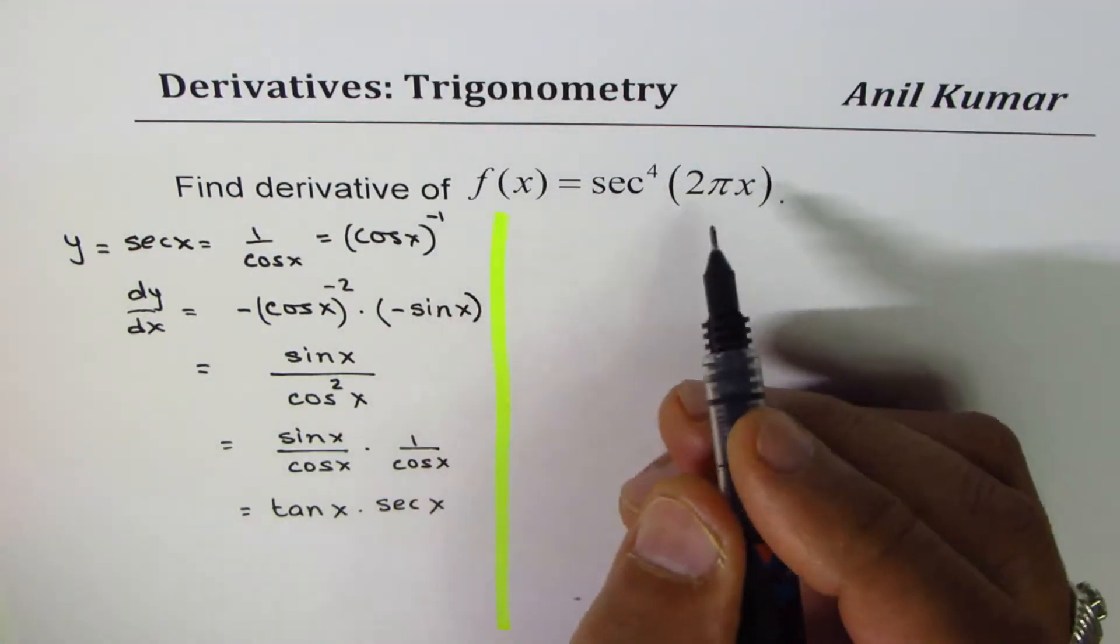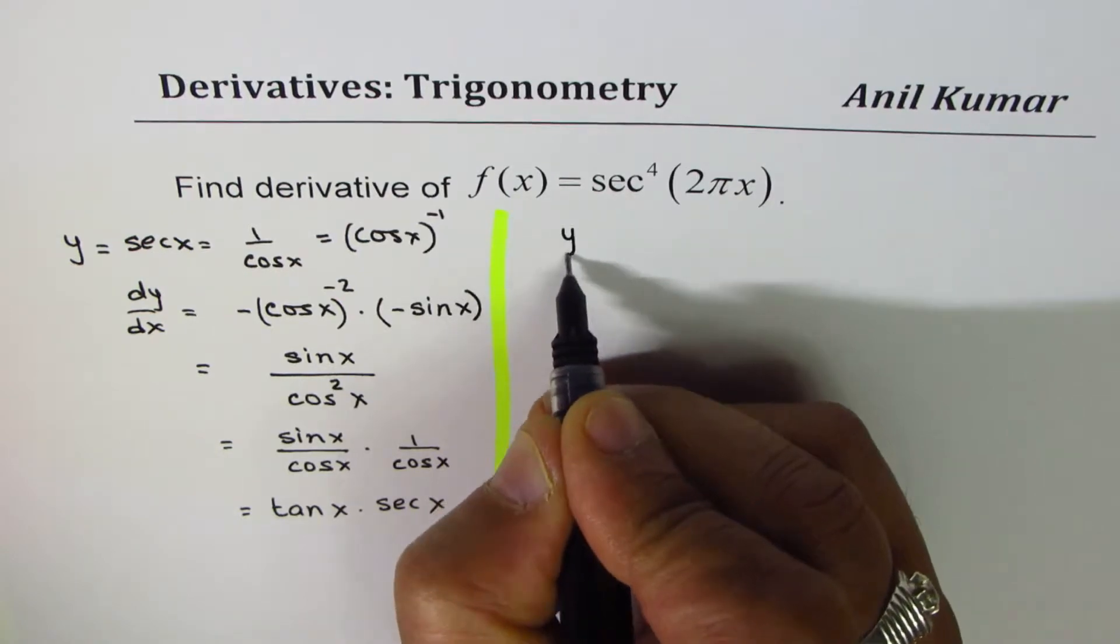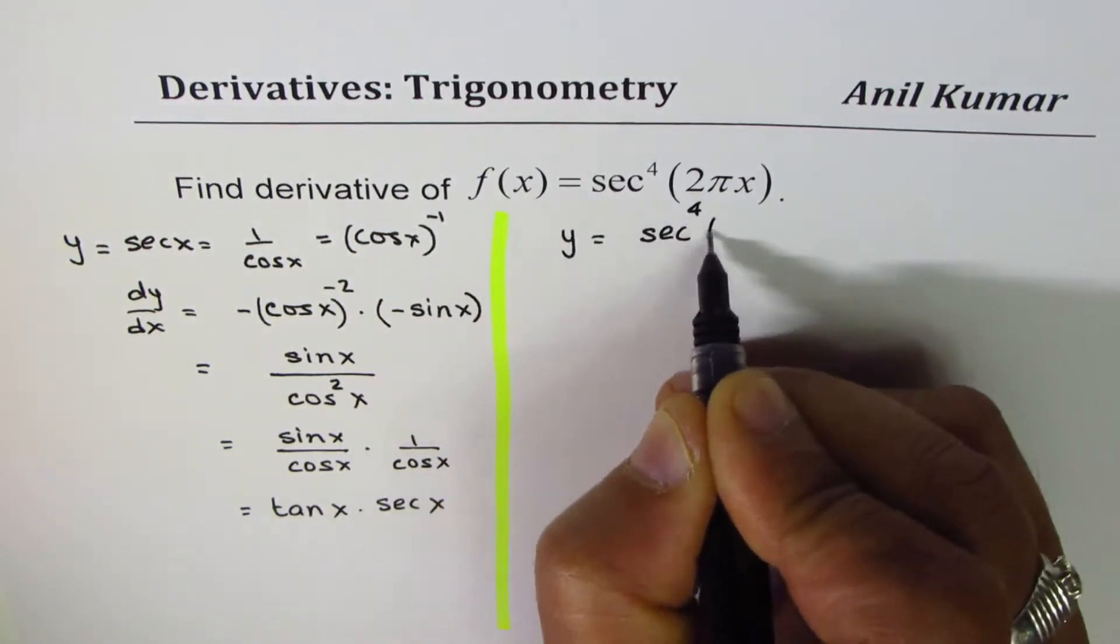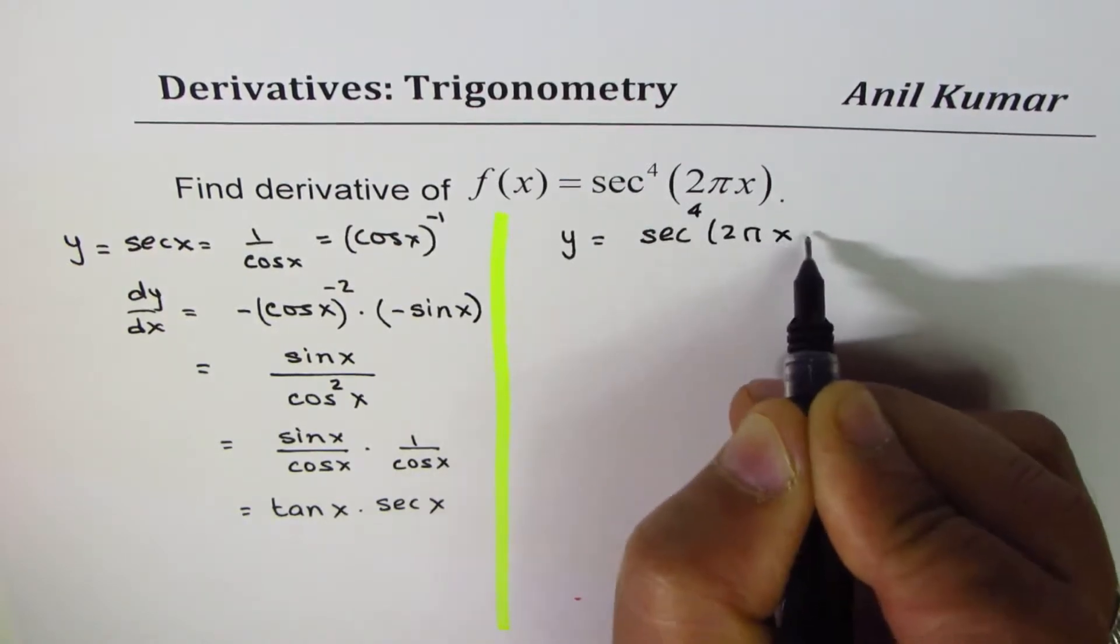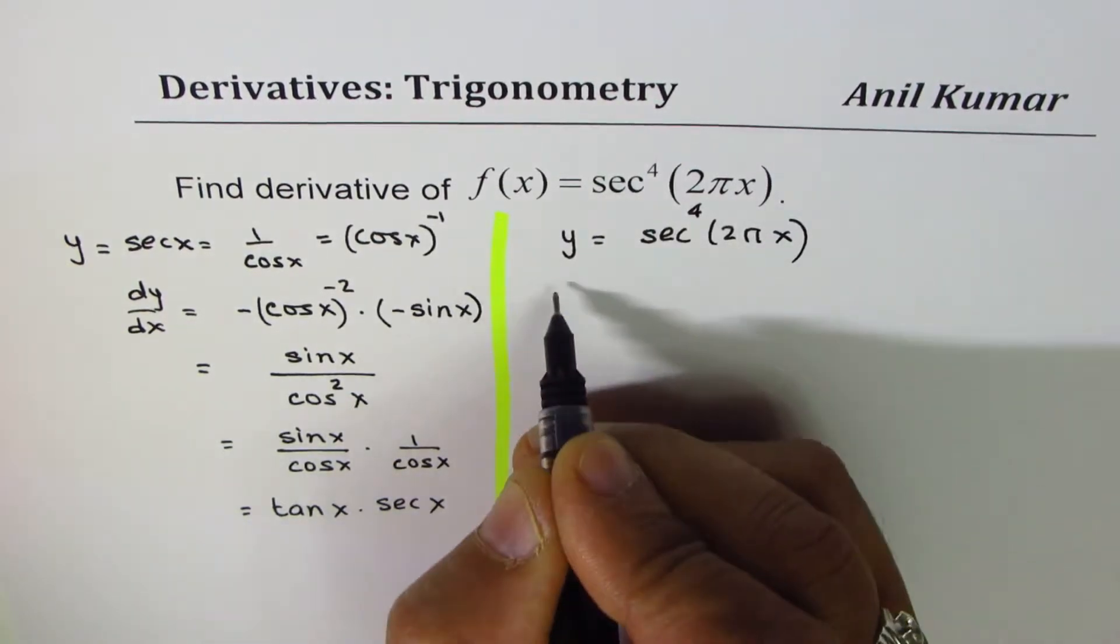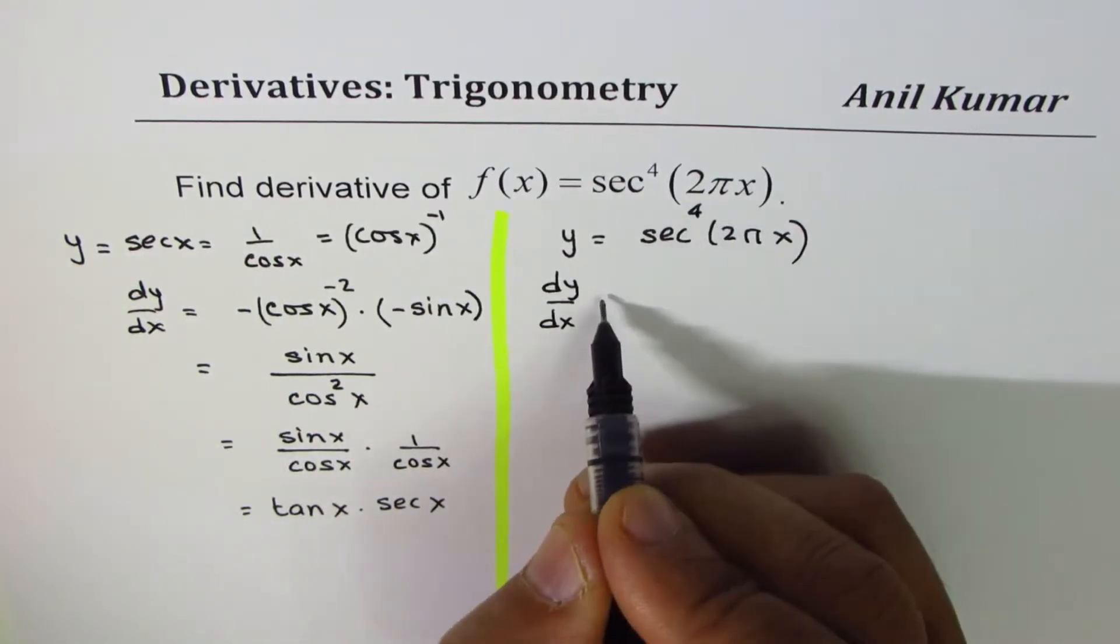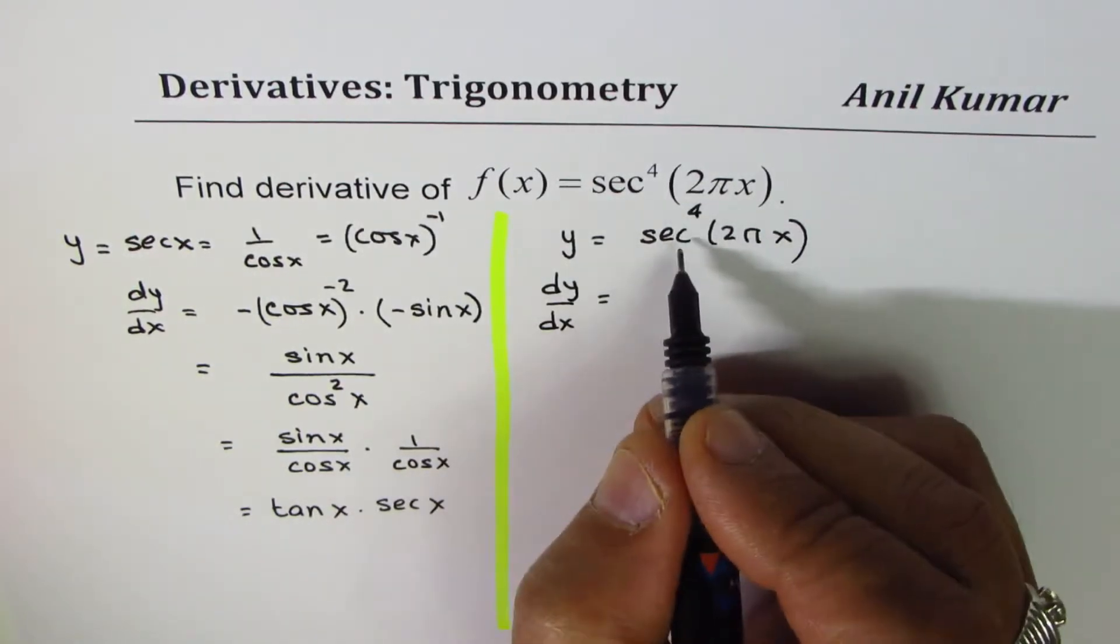Now let's begin to solve this. Let's say y is equal to secant to the power of 4, 2 pi x. So dy/dx - we'll apply the power rule to find the derivative of this.